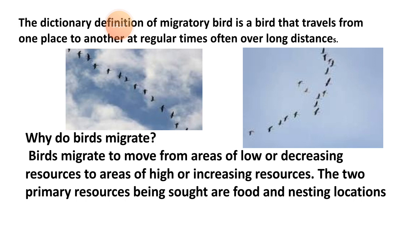Birds that nest in the northern hemisphere tend to migrate northward in the spring to take advantage of burgeoning insect populations, budding plants, and an abundance of nesting locations. As winter approaches and availability of insects and other food drops, the birds move south again. Escaping the cold is a motivating factor, but many species, including hummingbirds, can withstand freezing temperatures as long as an adequate supply of food is available.